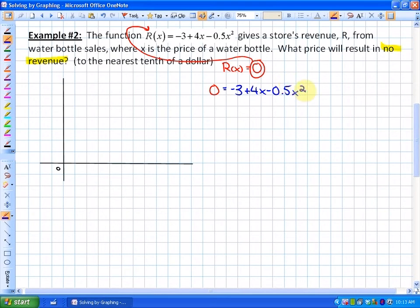So in order to find out where this revenue is equal to zero, in this case we have a revenue axis and an x-axis, or a price axis and a revenue axis, we're trying to find out where revenue is equal to zero. So if we graph this function and find out where it crosses the x-axis, that will tell us where the revenue equals zero. So in order to do that, I'm going to put this into standard form and then complete the square. So it's zero is equal to negative 1 half x squared plus 4x minus 3.